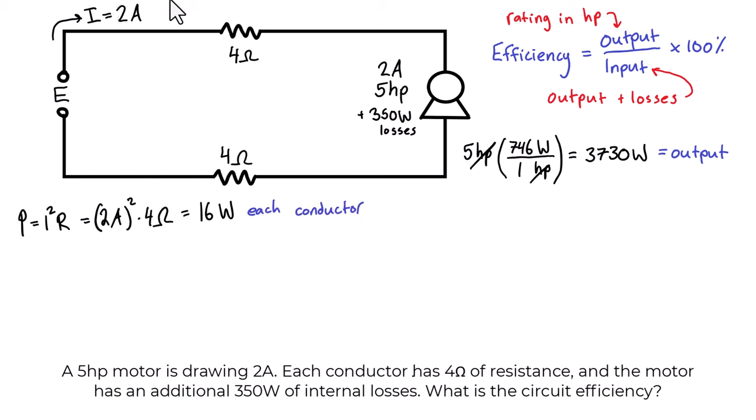So let's just lay out our output, losses, and input here. So our output we've already calculated, it's 3730 watts. Now our losses was the 350 from the motor itself plus 16 watts for the first conductor plus another 16 watts for the second conductor. And we're going to get a total amount of losses in this circuit at 382 watts in total. Then our input is going to be equal to our output plus our losses. So that's going to be 3730 watts plus 382 watts. So our total input to the circuit is going to be 4112 watts.